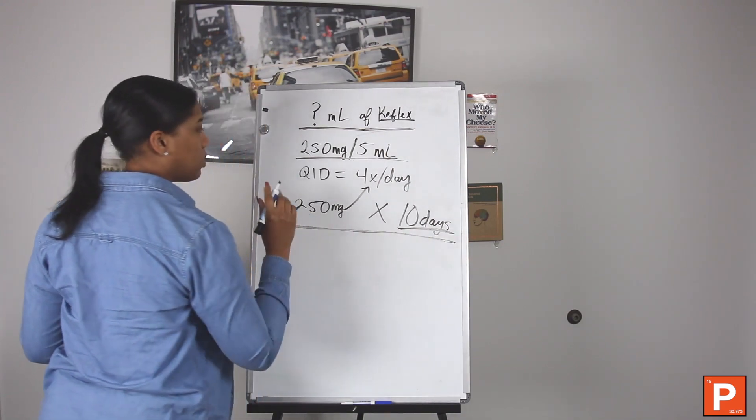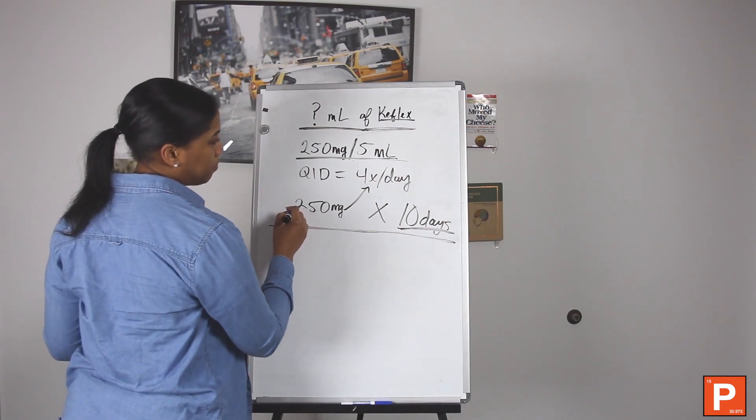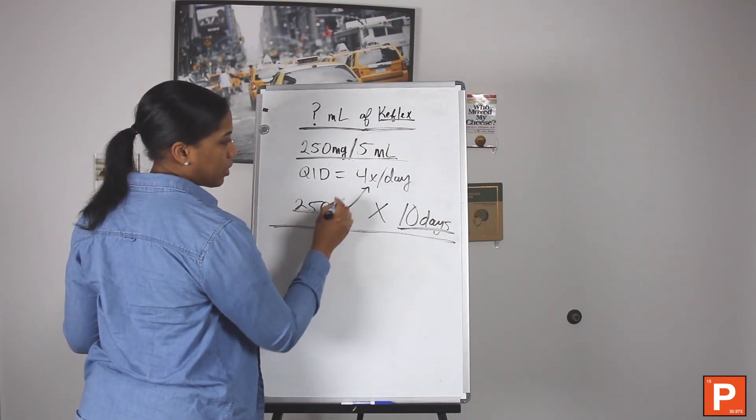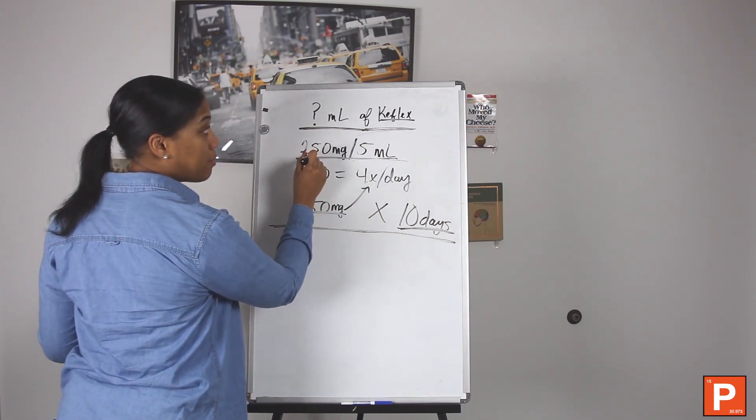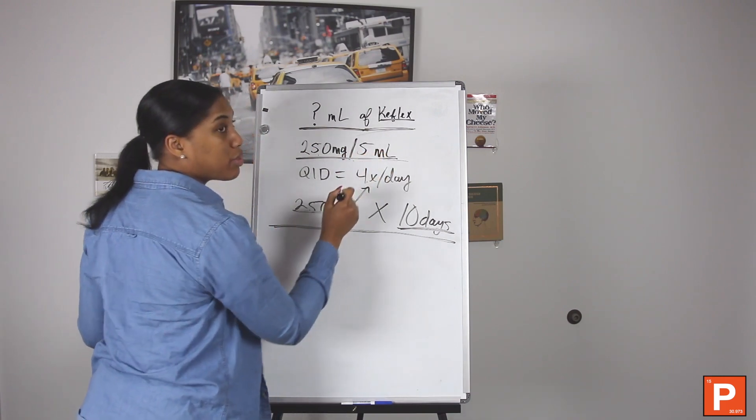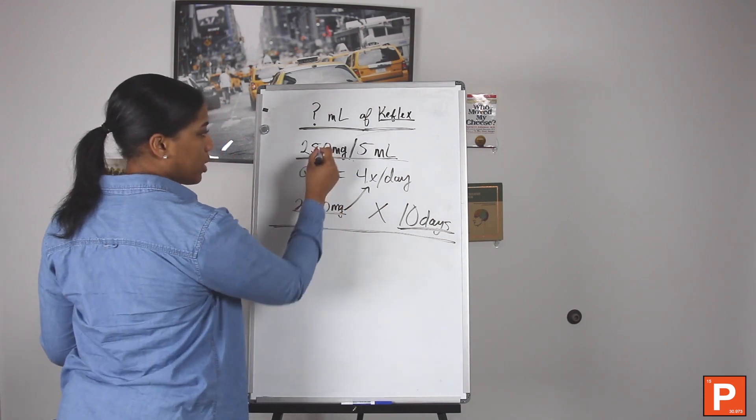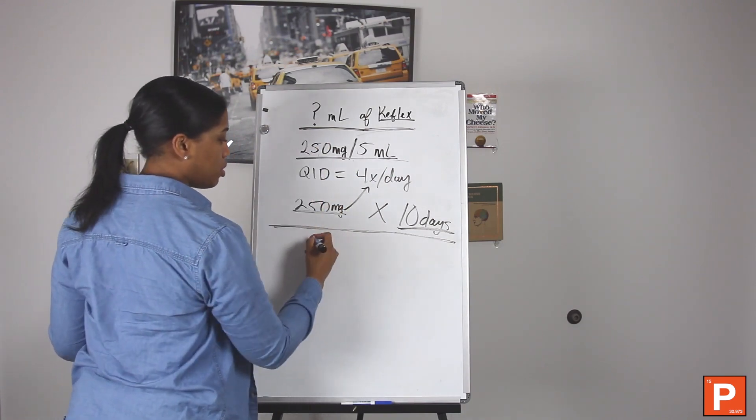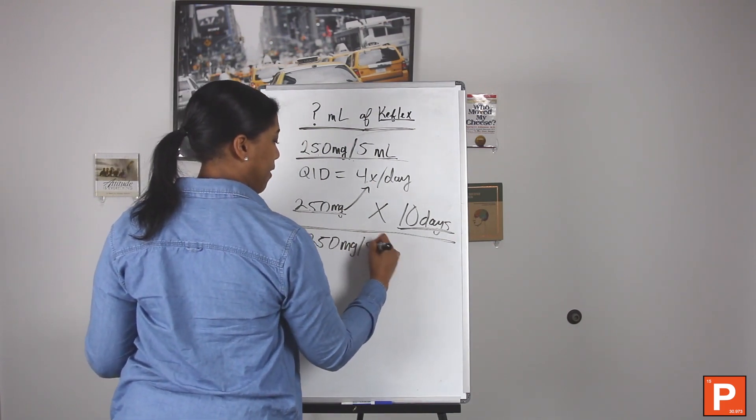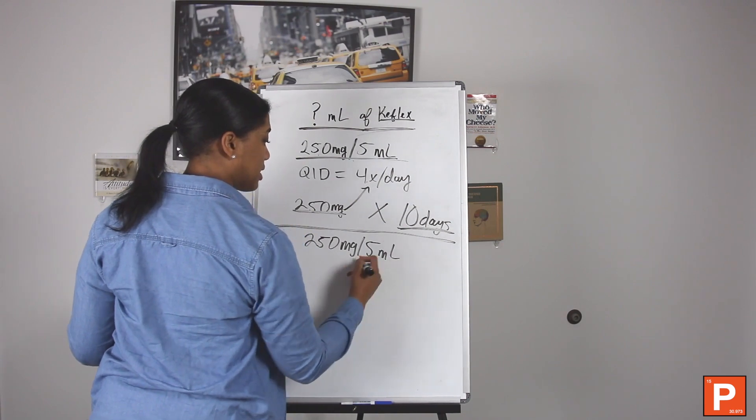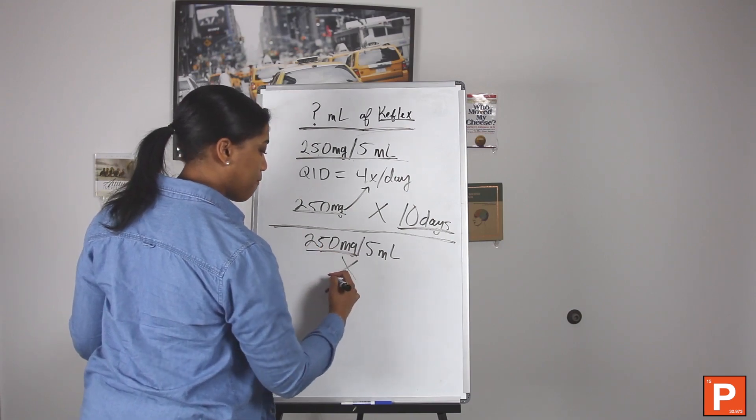Okay, so now that we know all this information and it's broken down, let's do the work here. Basically, it's already a given: they're going to have to take 250 milligrams four times per day. 250 milligrams is in 5 milliliters of this solution. So you would say 250mg/5mL times four, because they have to do this amount four times per day.